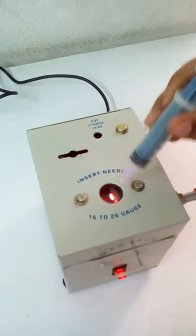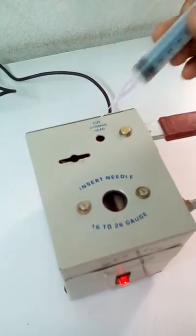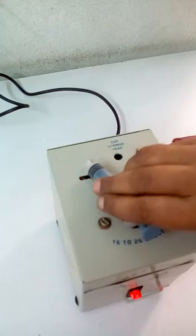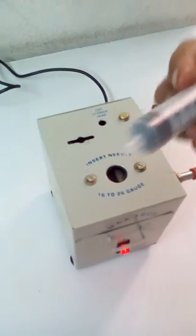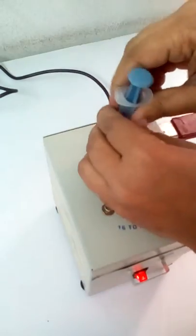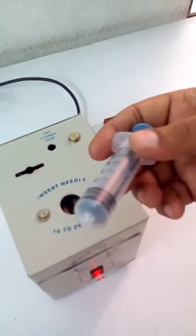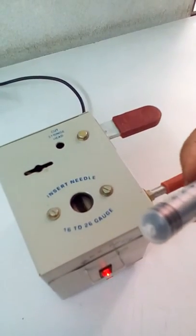The needle is placed in the electrodes and it burns. Now the needle has been removed and the syringe head will be cut. You can see the syringe head has been cut and the needle is already burnt.